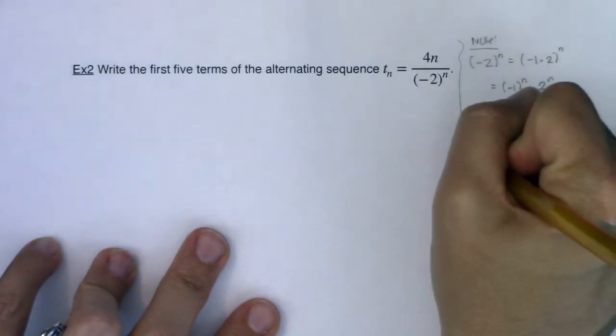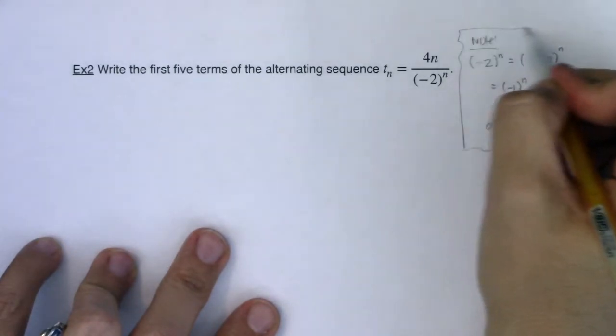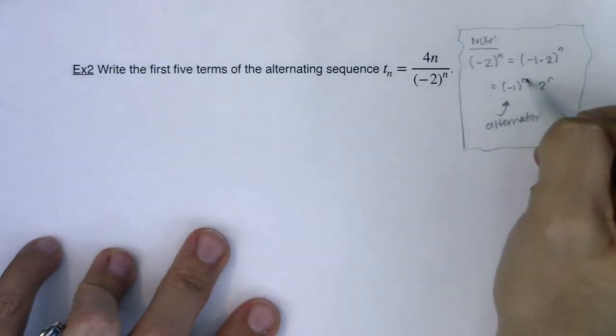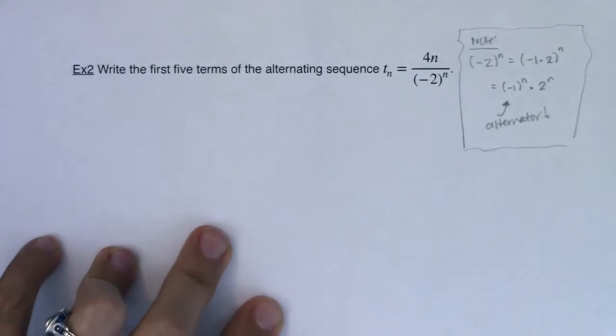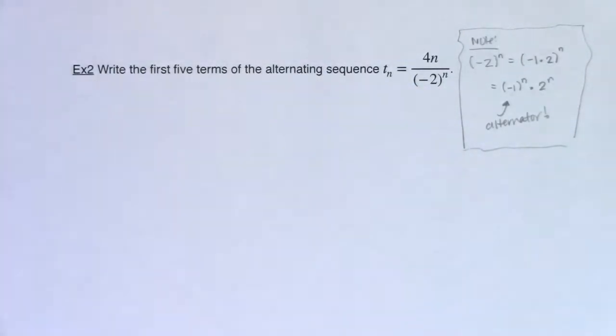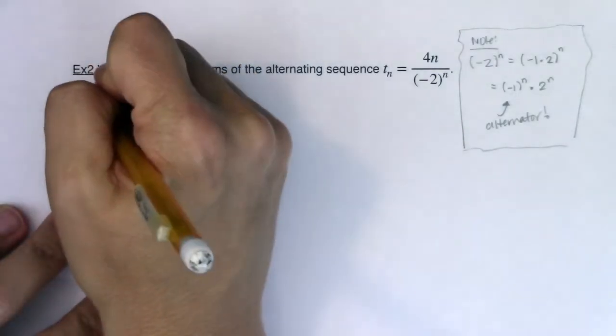Remember in example 1, I said common alternators are negative 1 to the n and negative 1 to the n plus 1. So our alternator is in here, it's just kind of hidden and masked because there's a negative 2 to the n. All right, so with that, let's get going.